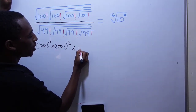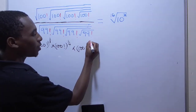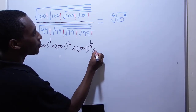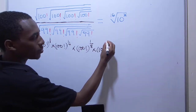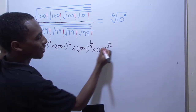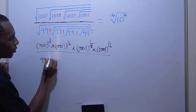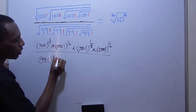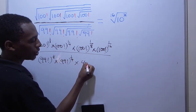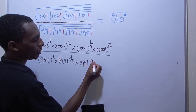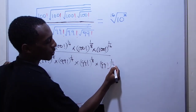The next term is 100 factorial, and the power is 1 half times 1 half times 1 half, which is 1 over 8. And lastly, we have 100 factorial to the power 1 over 16. I'll do the same for the bottom: 99 factorial to the power 1 half, times 99 factorial to the power 1 half, times 99 factorial to the power 1 over 8, times 99 factorial to the power 1 over 16.